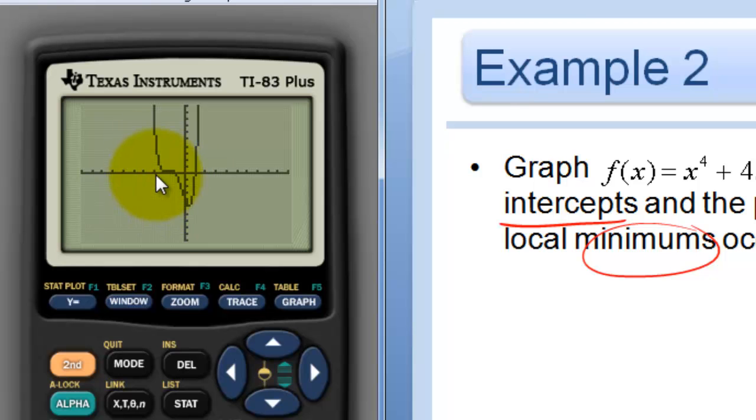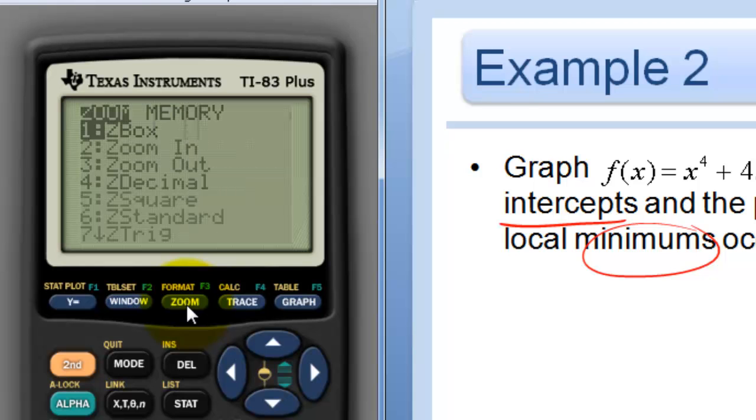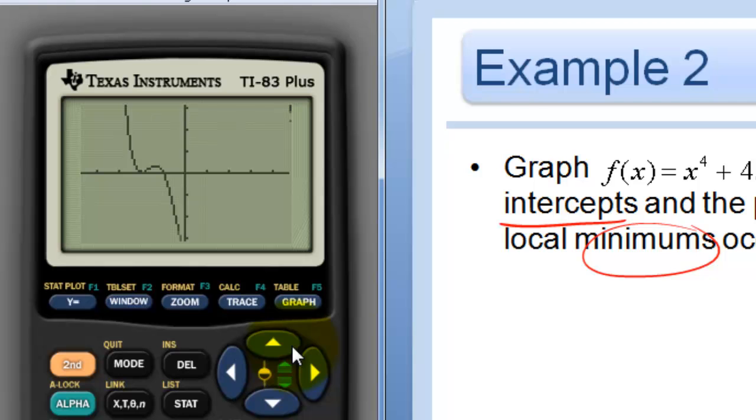Now when I graph this, a problem that I have is I can't really see what's going on over here. So I'm going to just zoom in a little bit closer. I'm going to do zoom 4. And now I can see much better that I have a min here, a max here, and now I can't see this min anymore. And so I'm going to have to adjust my window out and in as I go and do this problem.